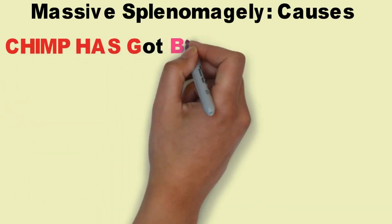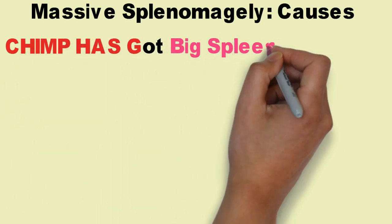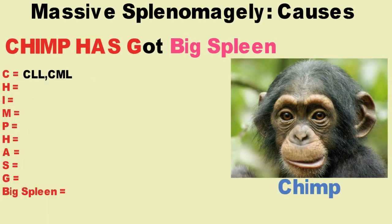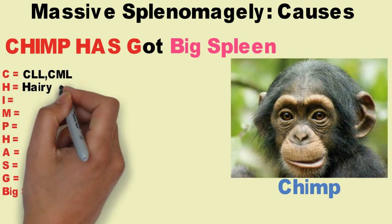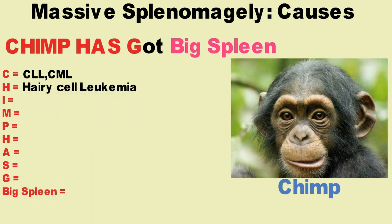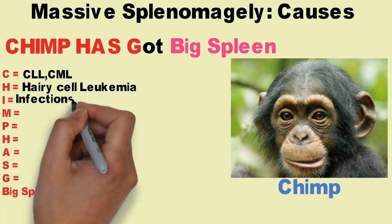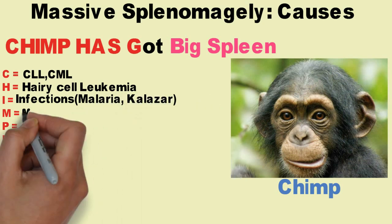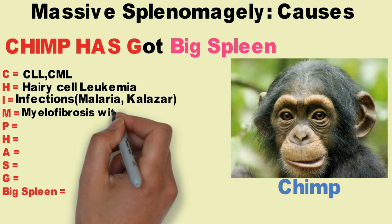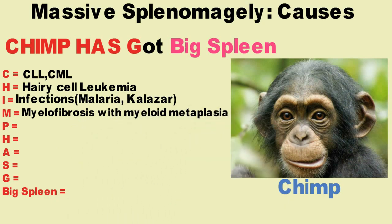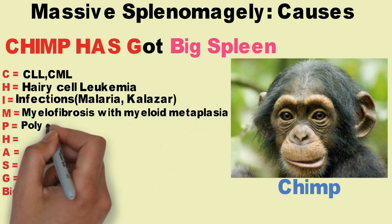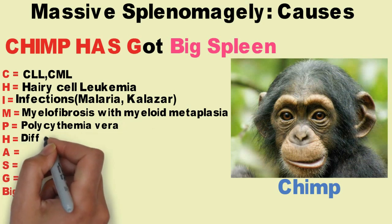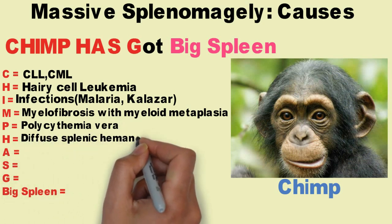C is for CLL and CML. H is for Hairy Cell Leukemia. I is for Infections like Malaria and Kala-azar. M is for Myelofibrosis with Myeloid Metaplasia. B is for Polycythemia Vera. S is for Diffuse Splenic Hemangiomatosis.